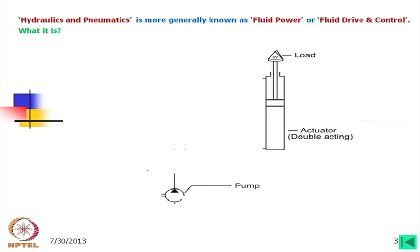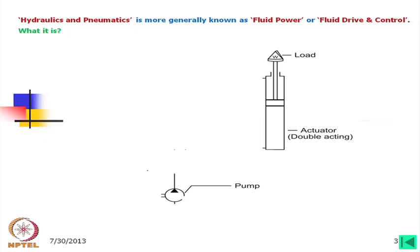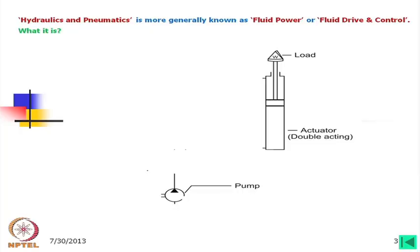We will think of supplying the oil to the cylinder using a pump. We can directly connect this pump to the bottom of the actuator and then lift the load, but the question is: when the pump is running, how can we take out the oil to lower the load?